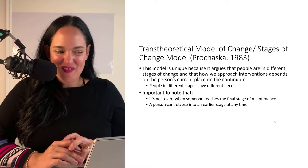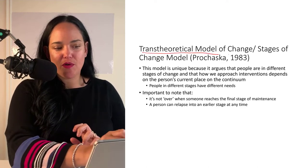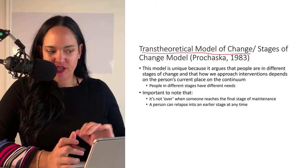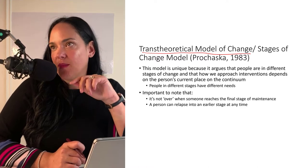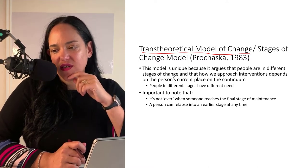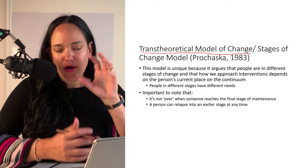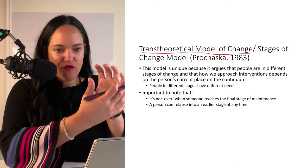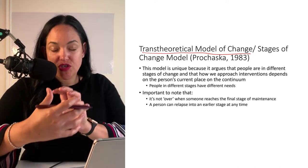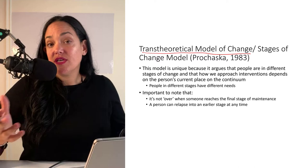One of my favorite models of behavior change is something called the transtheoretical model of change, also called the stages of change model. What makes this model unique compared to some of the other models is that there's a temporal aspect to it. It argues that people aren't all at the same place — as far as our particular stage of change, we are very different.